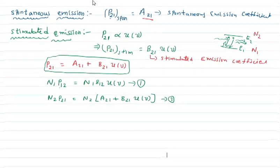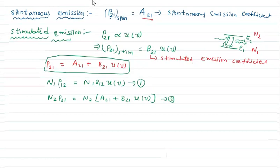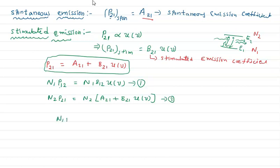At thermal equilibrium, the number of atoms going from the ground state to the higher energy state equals the number going from the higher energy state to the ground state. That means N1·P12 equals N2·P21.